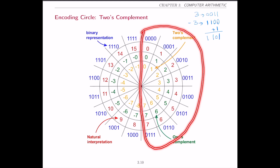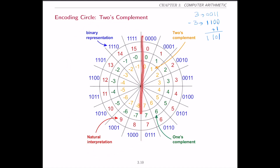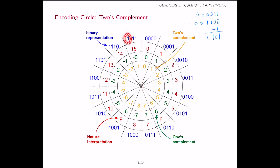Just like in 1's complement and sign-magnitude, all binary numbers that start with 0 have a positive interpretation (0 to 7), and all binary numbers that start with 1 have a negative interpretation. So you can still look at the most significant bit to tell whether a number is positive or negative. Also notice that we have up to 7 on the positive side but up to 8 on the negative side — one more negative number than positive, because 0 is on the positive side.